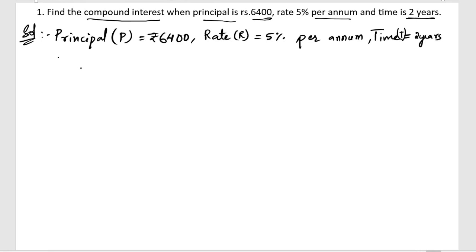Now, we are having the formula for finding the compound interest. So the formula is A equals P into 1 plus R by 100 whole to the power of T.